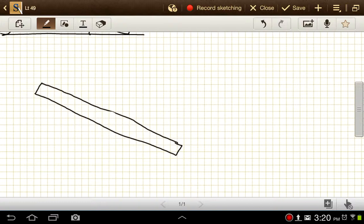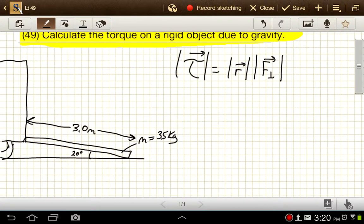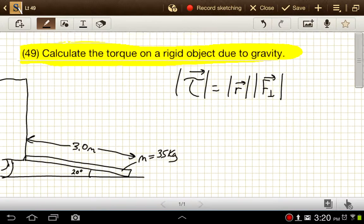Uniform meaning it's the same density all the way through the object. So in this problem, let's look at an example of a ramp that leads up to a truck, and how much torque we have on that ramp due to gravity. So we've got the mass of that ramp is 35 kilograms, the total length of the ramp is 3.0 meters, and it makes a 20 degree angle when it's extended.